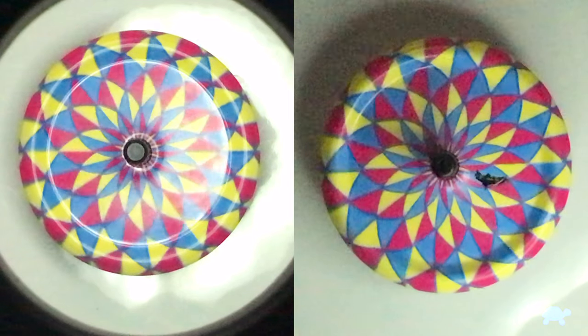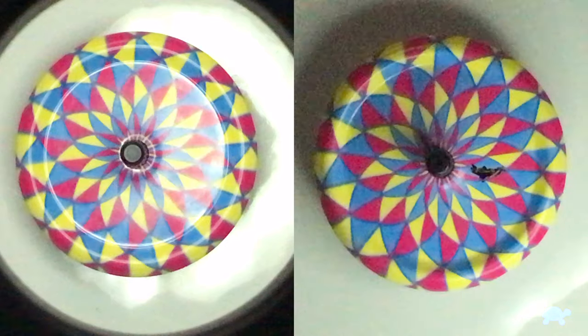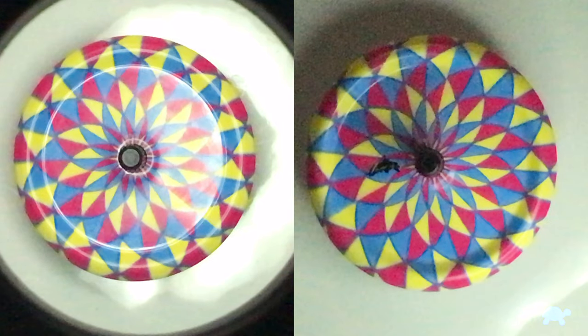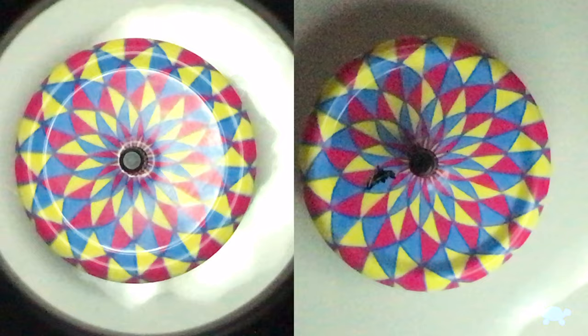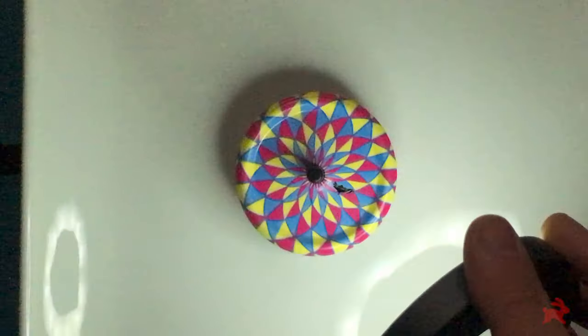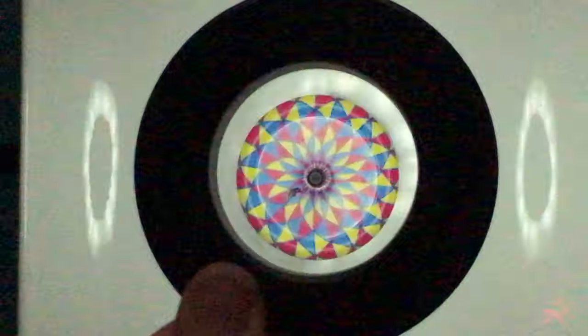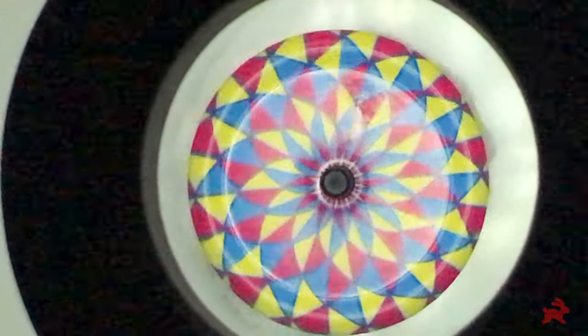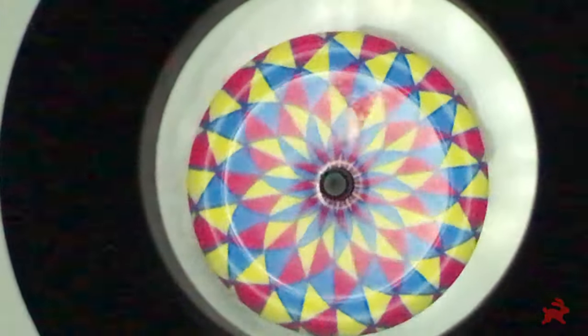These are the exact same spin pretty much. The only difference is one of them has the little black mark so you can kind of track what's really happening. We can't really perceive much motion on this pattern since it's so symmetrical, but I love that little ratcheting effect that happens here.